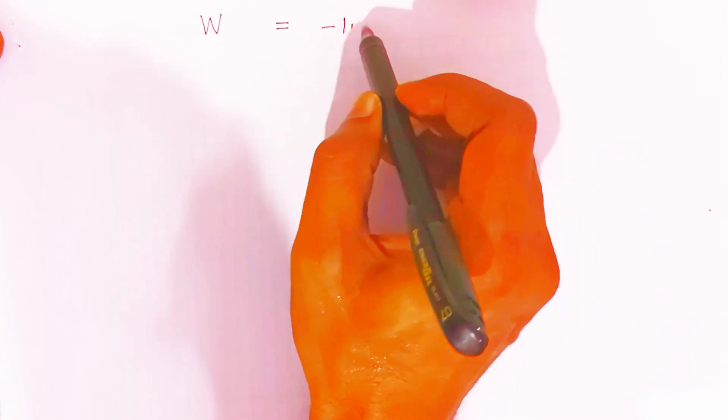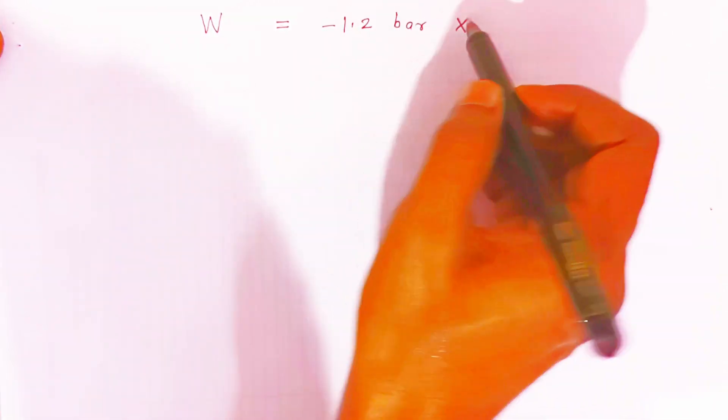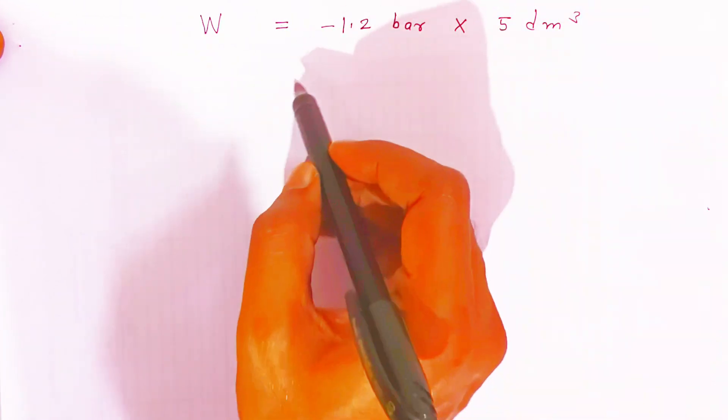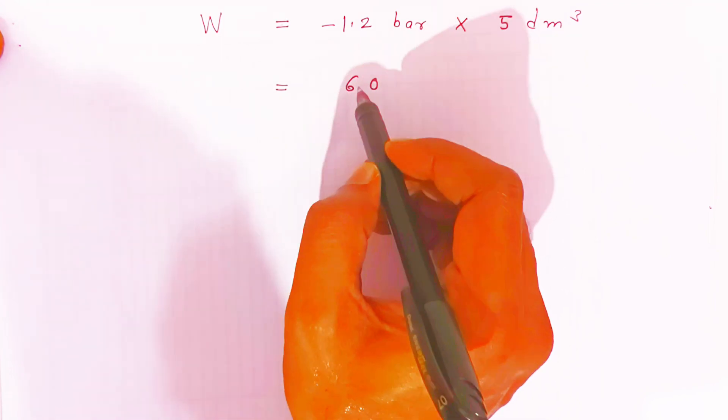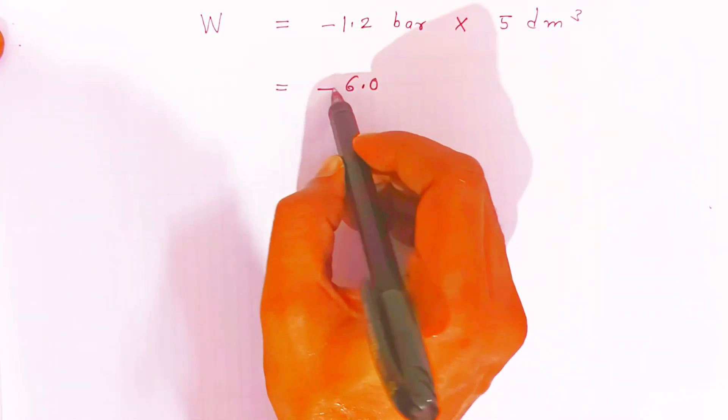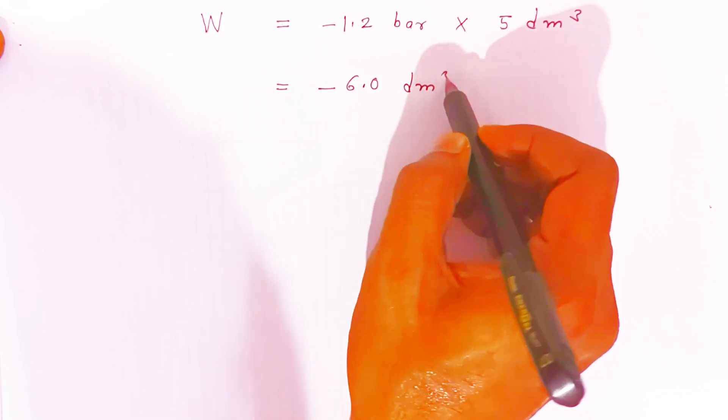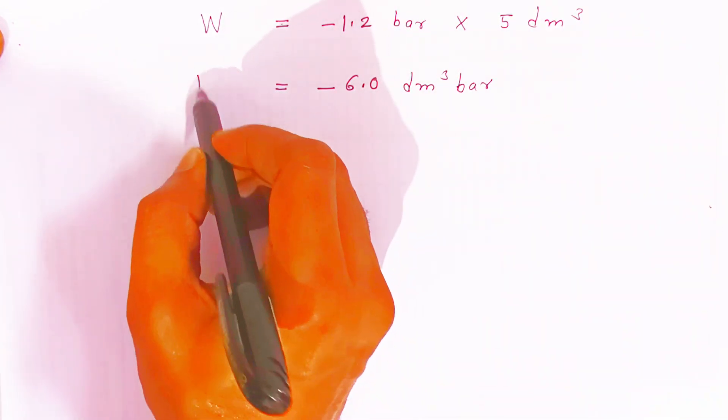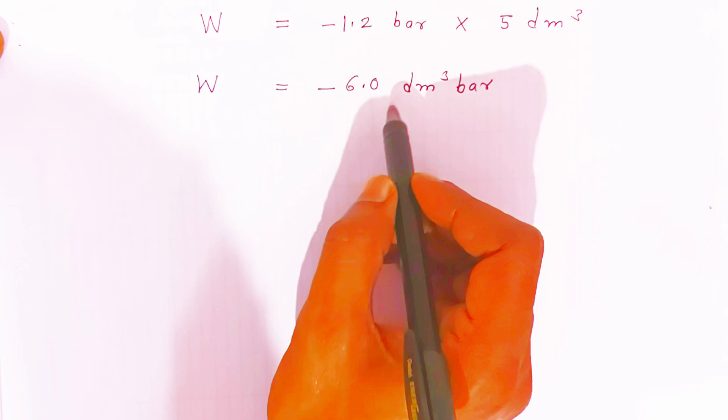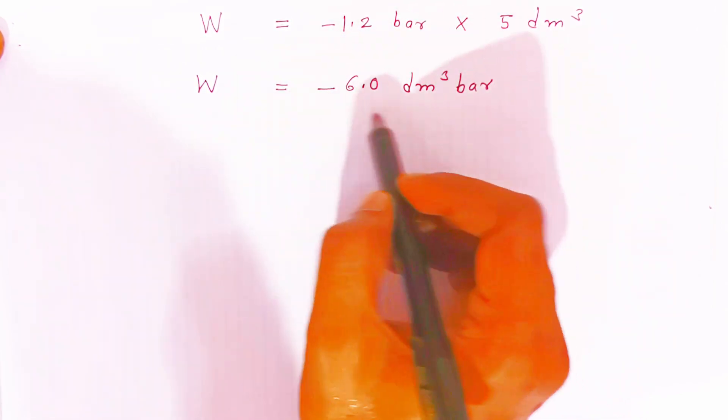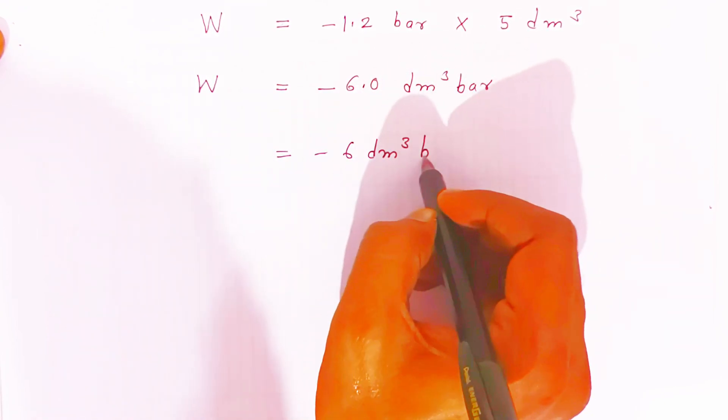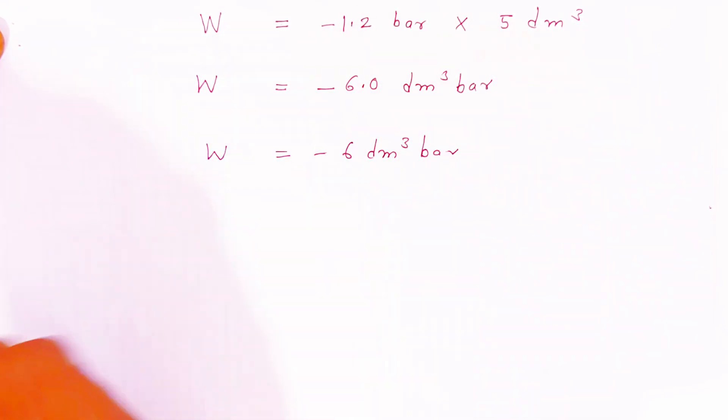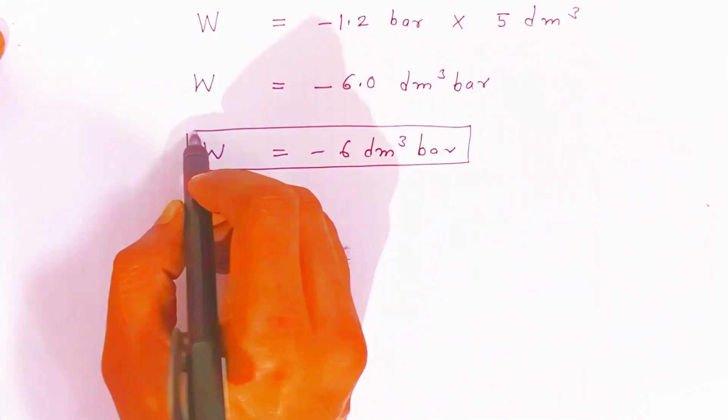Therefore, here the work done will be 1.2 bar into 5 dm³ which is equal to 6. So before one digit you have to put the decimal. Since it is negative minus 6 we will write dm³ first and then bar. So this is the work done. This is the energy which is lost by the system. So work done is negative, that is minus 6 dm³ bar.